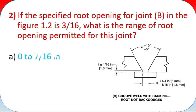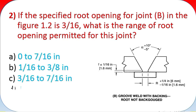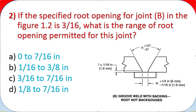Question 2: If the specified root opening for joint B in figure 1.2 is 3/16 inch, what is the range of root opening permitted for this joint? A: 0 to 7/16 inch. B: 1/16 to 3/8 inch. C: 3/16 inch.